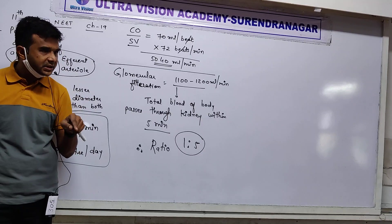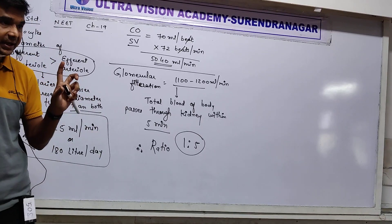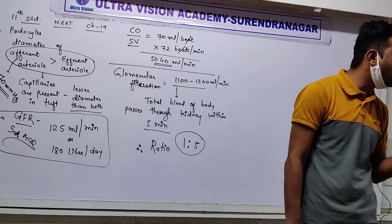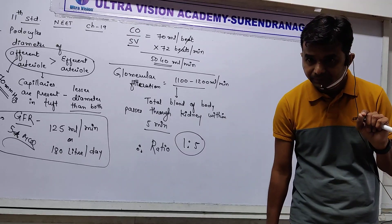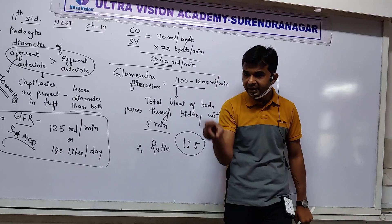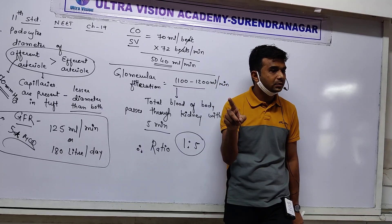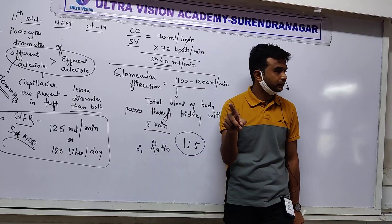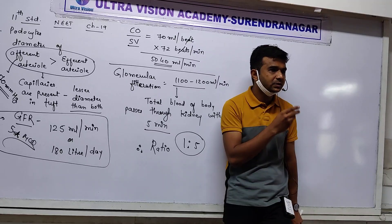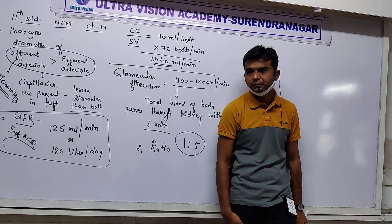In diabetic patients, gradually the PCT is affected, then the loop of Henle, then the DCT — so the kidney progressively fails. We are talking about IDDM — insulin-dependent diabetes mellitus. Diabetes mellitus is due to insulin deficiency, whereas diabetes insipidus is due to deficiency of ADH.